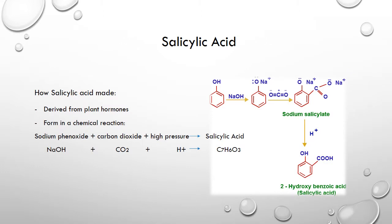Besides the fact that salicylic acid can be derived from plant hormones, it can also be formed in a chemical reaction in which sodium phenoxide is mixed with carbon dioxide under high pressure.